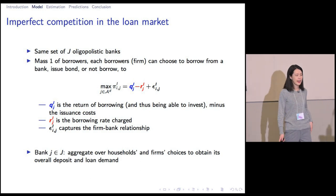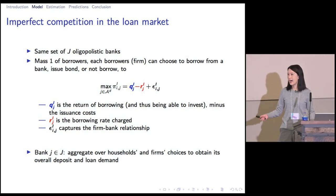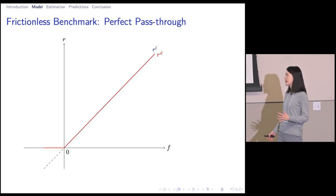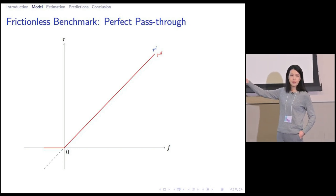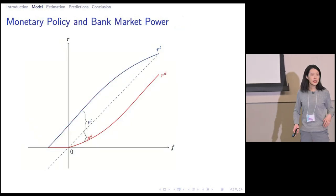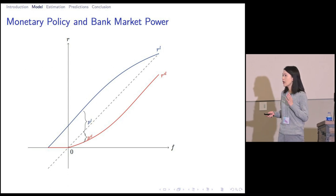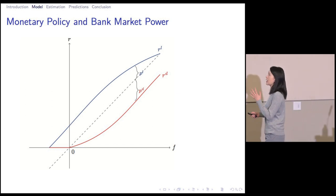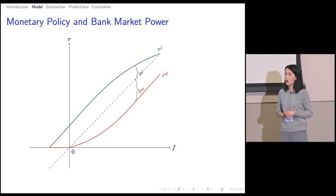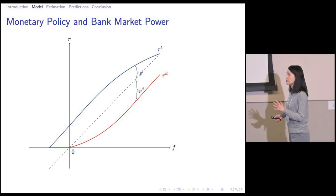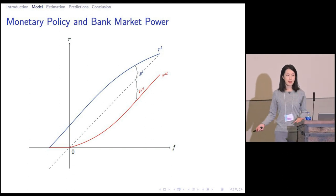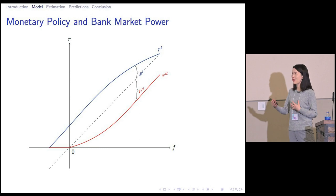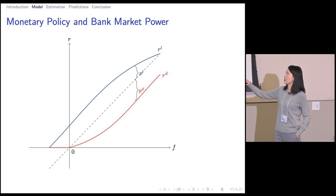Let's start our analysis from the simplest case: no friction of any kind and banks have no market power. The competitive force on the market will make the deposit rate and loan rate converge to the federal funds rate. Next, we introduce market power, which allows banks to charge a spread. When there's market power, as the federal funds rate increases, it becomes more costly for households to hold cash, so bank deposit becomes relatively more attractive. This allows banks to behave as if they have greater market power on the deposit market and charge a higher deposit spread.